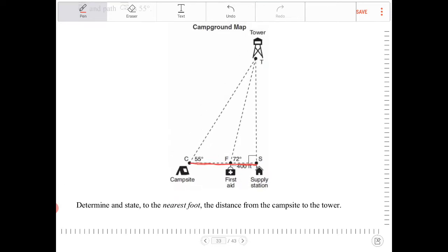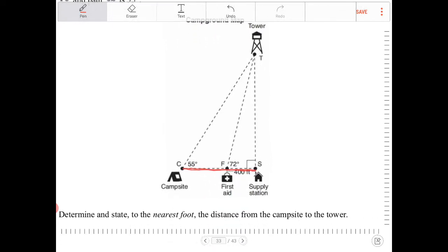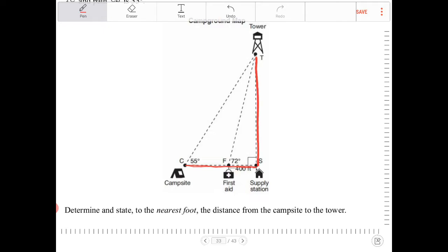The path from the supply station to the tower T is perpendicular to the path from the supply station to the campsite. So what they're saying is this line segment here is perpendicular to that red line that I drew there, and it's already labeled with the right angle symbol there.